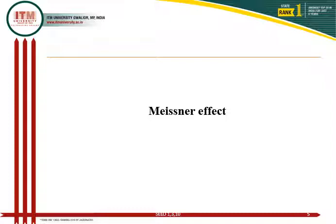We have discussed a lot about electrical properties, but here we are opening another dimension: the properties of superconductors under magnetic field. One of the phenomena that occurs in superconductors below the transition temperature is called the Meissner effect, and this effect we will now learn about.